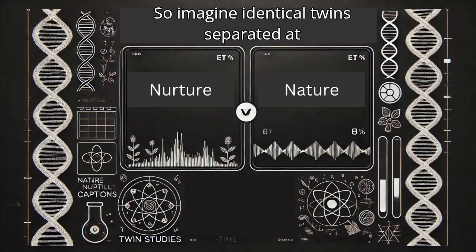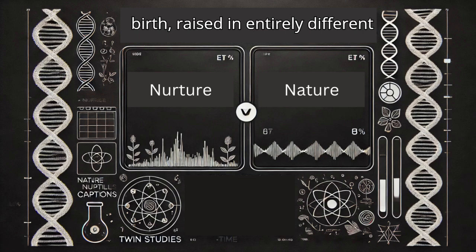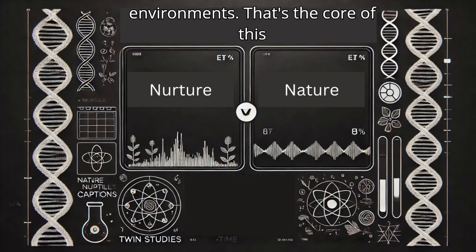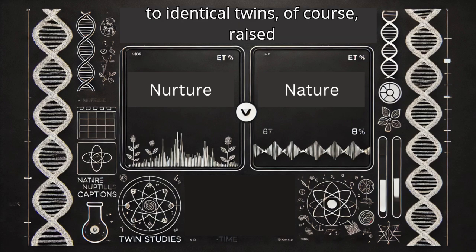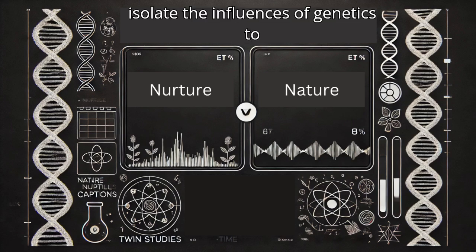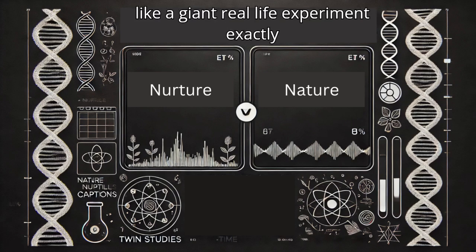Imagine identical twins separated at birth, raised in entirely different environments. That's the core of this study. By comparing these twins to identical twins raised together, researchers could begin to isolate the influences of genetics. Like a giant real-life experiment. Exactly.